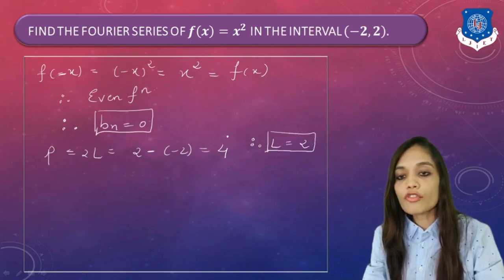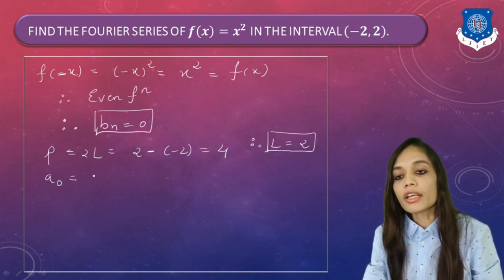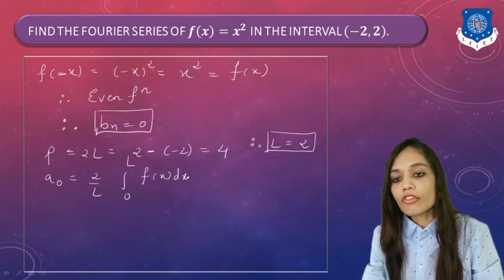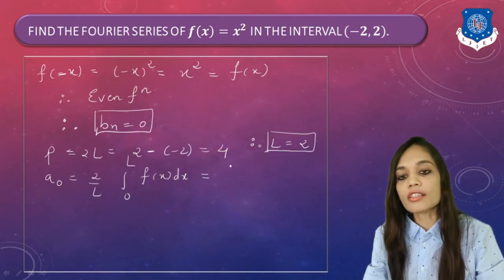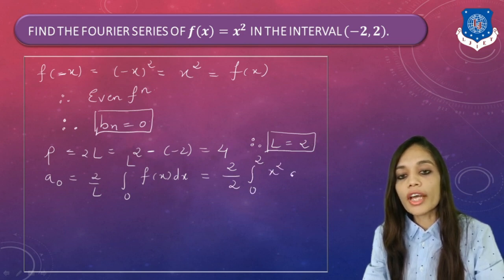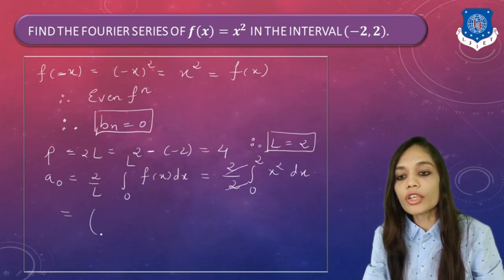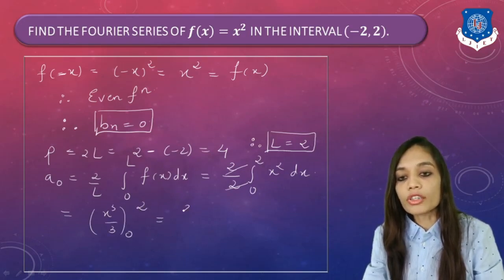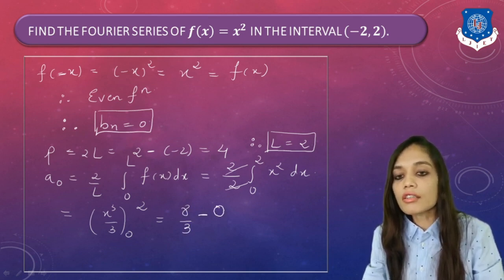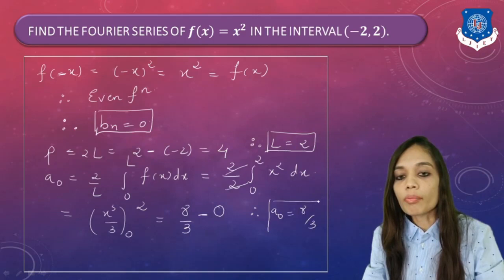Now let us find the value of A0. A0 = (2/L)∫₀ᴸ f(x)dx. Substituting L = 2 and f(x) = x², we get (2/2)∫₀² x²dx. The 2s cancel, and integrating x² gives x³/3 with limits 0 to 2. On substituting the upper limit we get 8/3, and the lower limit gives 0. Therefore A0 = 8/3.